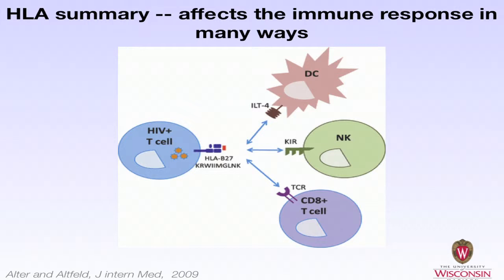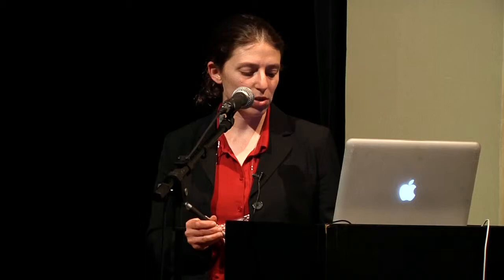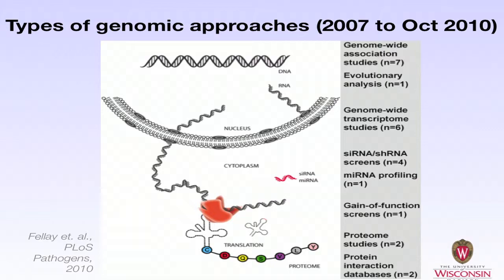Lastly, I'm going to focus on some genomic approaches used recently to examine other host genes that may be associated with HIV disease course. From 2007 until October 2010, a number of different genomic approaches have been used, including genome-wide association studies, evolutionary analyses, transcriptome studies, gain-of-function screens, and proteome studies. These genomic approaches have spanned from looking at the DNA all the way to looking at the proteins present in an individual.